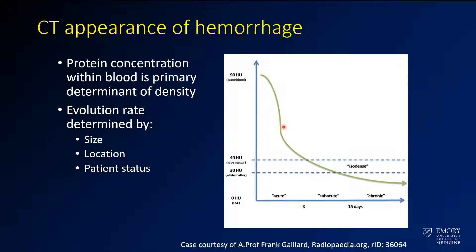Over time, it's going to go down and become somewhat isodense to gray and white matter. This is when you're in a window where you can have isodense subdural hematomas. Over time, it becomes more chronic and will get closer to the appearance of CSF.